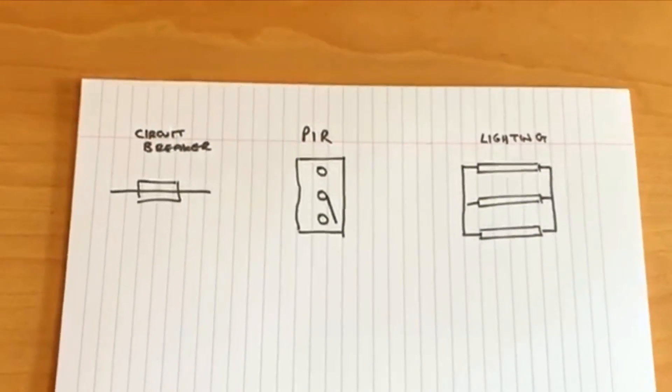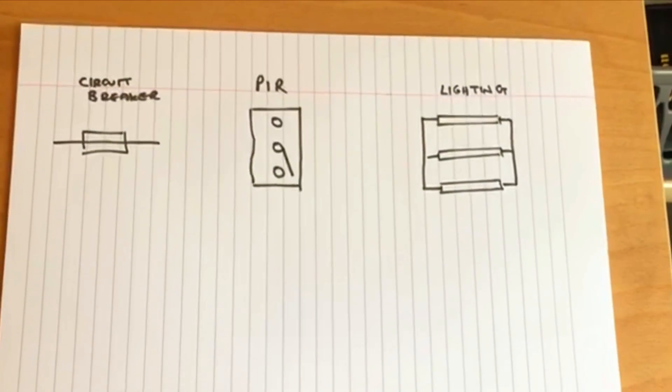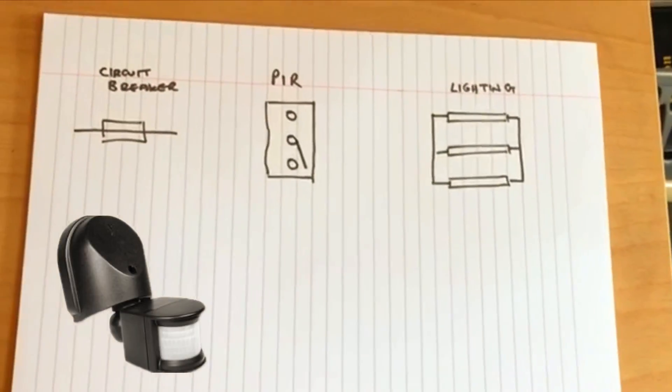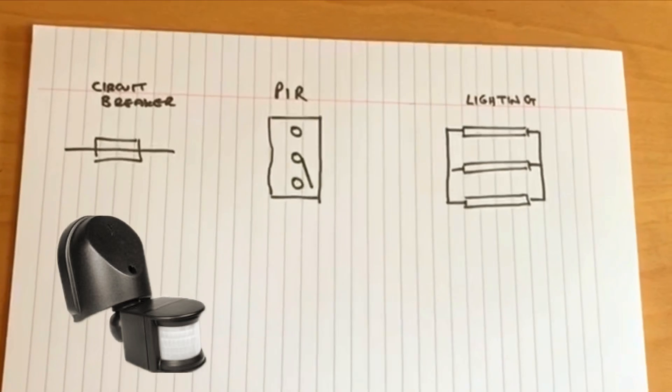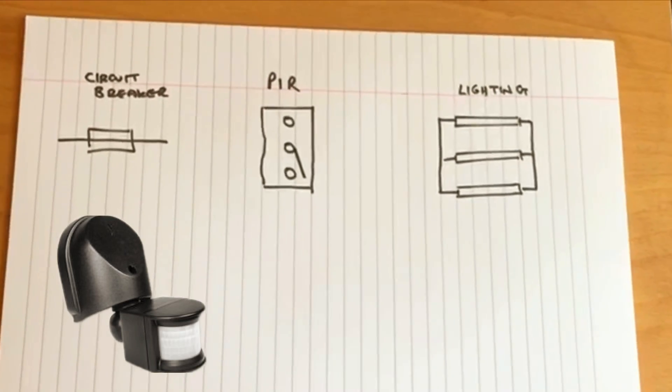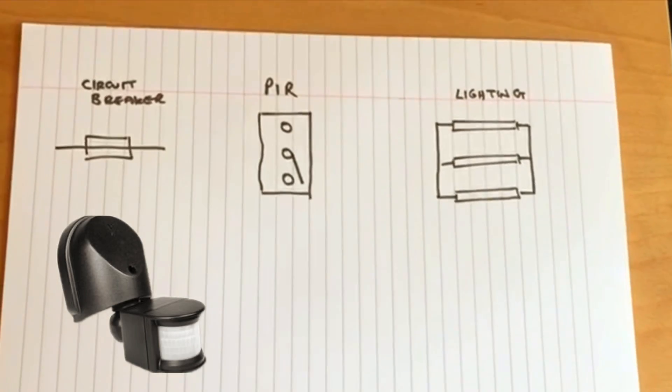So for this video I'd like to consider the use of a PIR when controlling a lighting circuit. A PIR stands for passive infrared, and basically it's a detector that detects heat from objects that pass through its field.